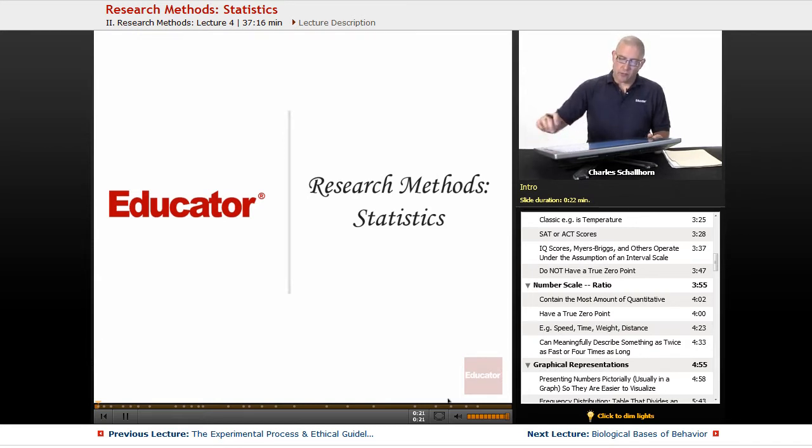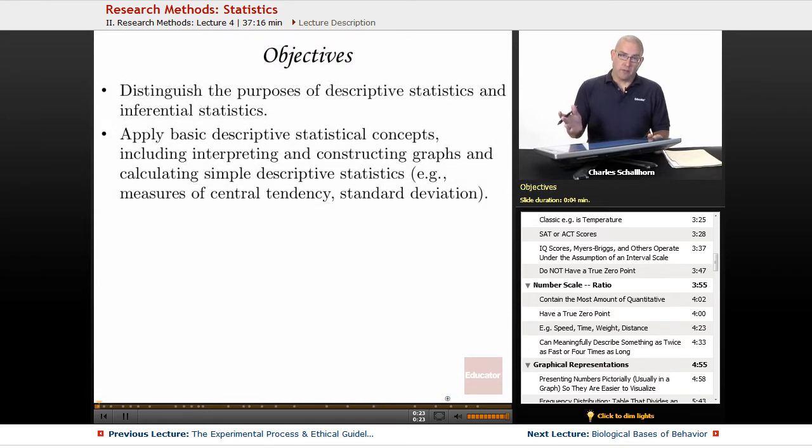So as we examine research methods, we know that there are a couple of objectives. One is to examine the purposes of descriptive statistics, but also inferential statistics. Those are two of the kinds of stats we're going to be looking at.